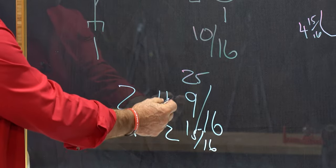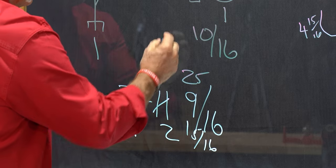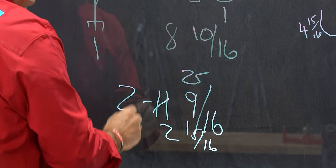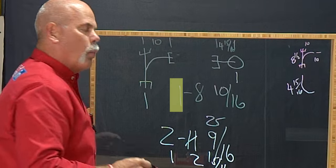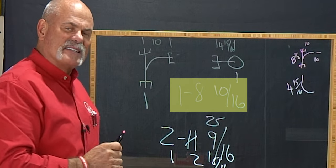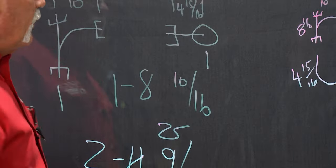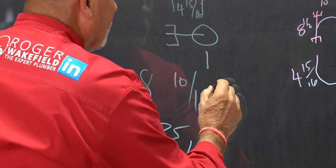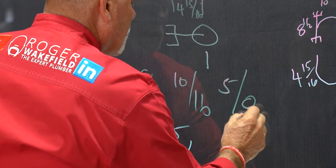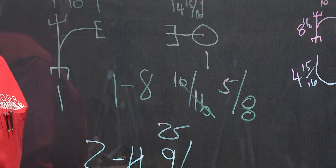Now I pulled that inch from here, so 10 minus two is eight. Two foot minus one, one foot eight and 10 sixteenths. Of course, you're going to reduce that fraction, one foot eight and five eighths. Now that's what you're going to cut on your tape measure.